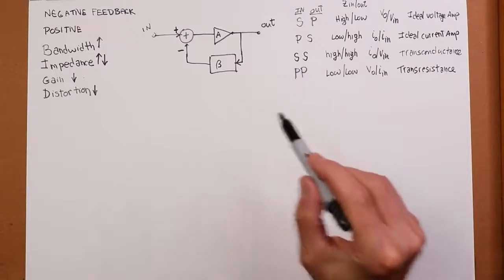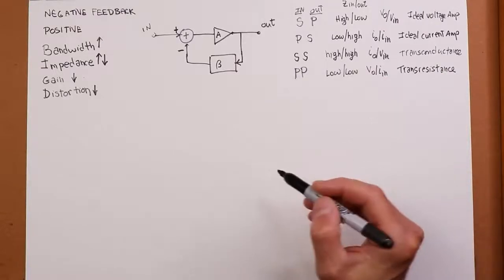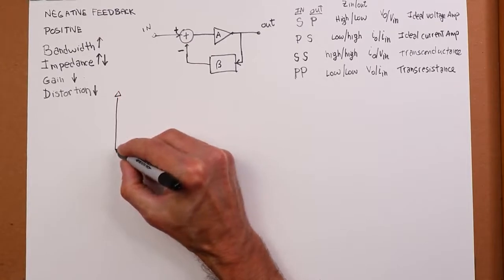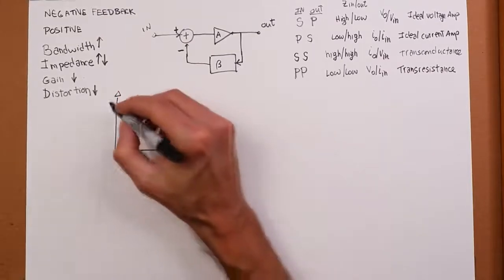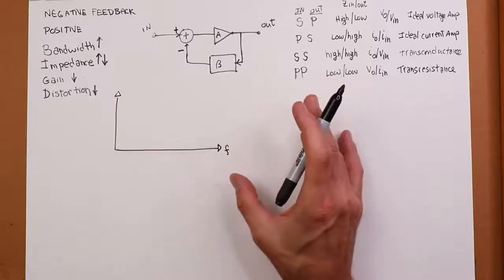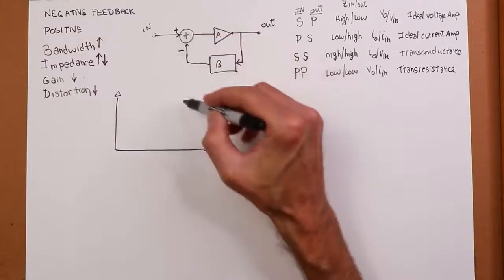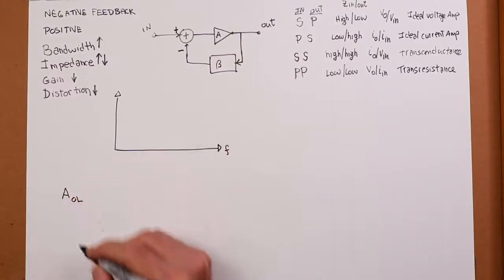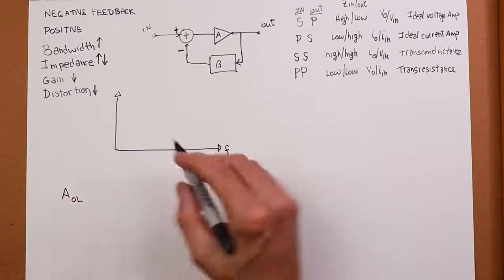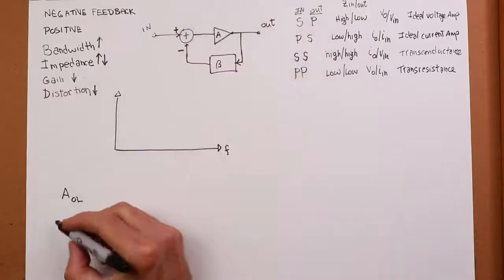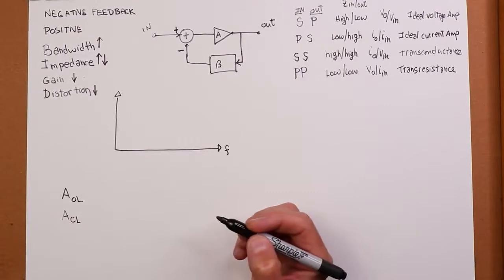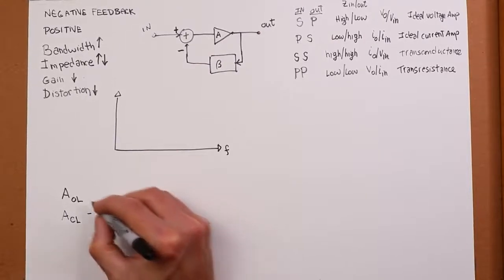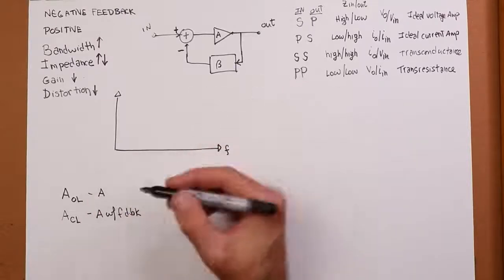Now we need to define a couple more characteristics. If we look at the amplifier itself — take a typical op amp — we can plot a gain characteristic. We need to delineate between the gain of the amplifier itself and the gain of the system. The gain of the op amp by itself we call A-OL, which stands for open loop — meaning we break open the feedback loop.